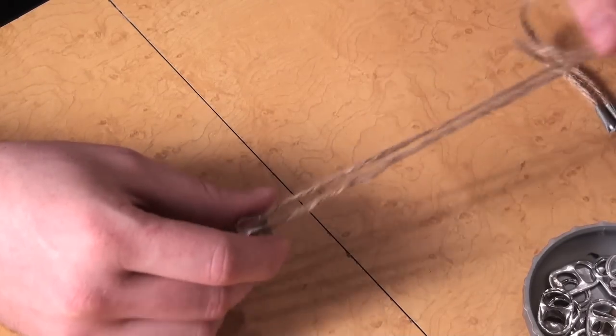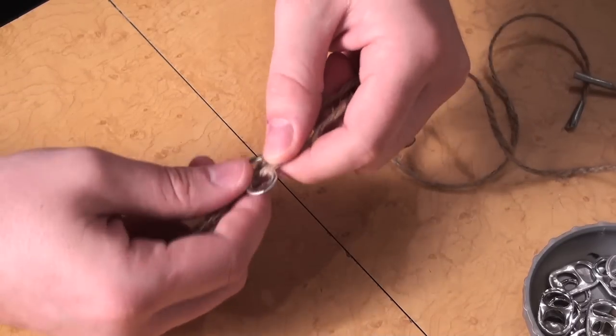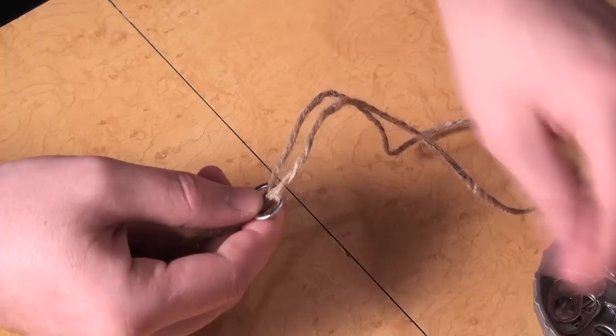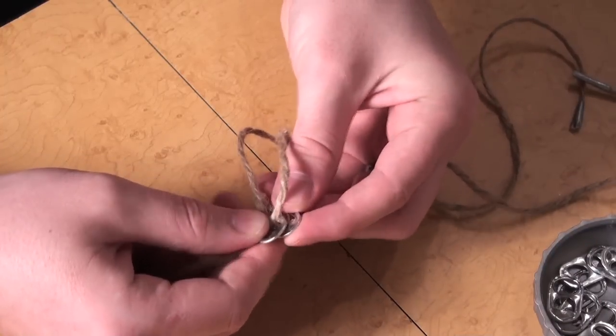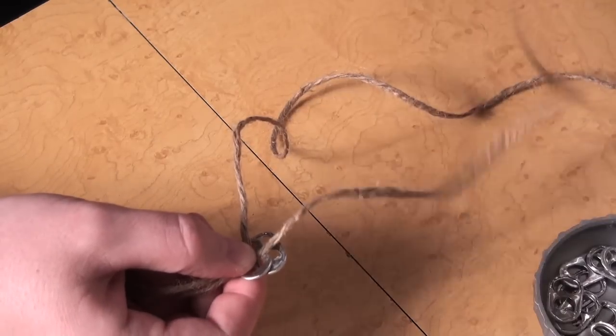Thread your twine through the holes of the soda tab and move to the knot. Grab your next tab and make sure the smooth edges are always on the outside so they won't get caught on your clothing when you're done.